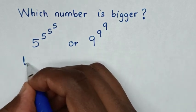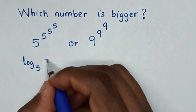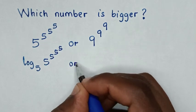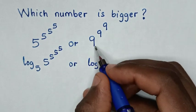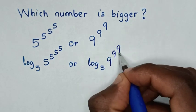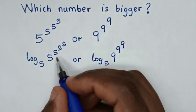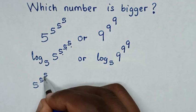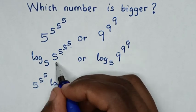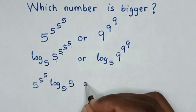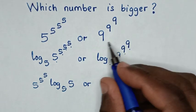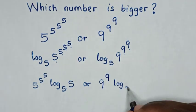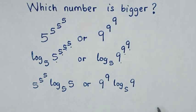We'll compare log base 5 of (5 power 5 power 5 power 5) with log base 5 of (9 power 9 power 9). In the next step, these three powers will move to the front, giving us 5 power 5 power 5 times log base 5 of 5, compared with 9 power 9 times log base 5 of 9.